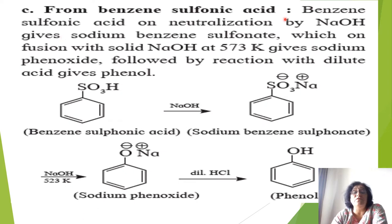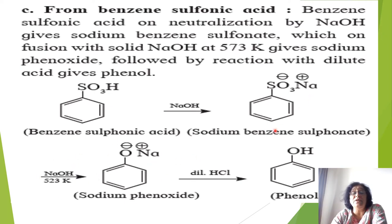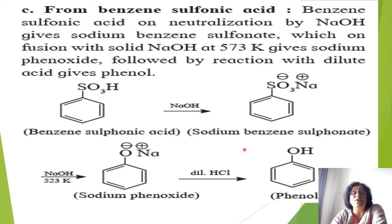Preparation of phenol from benzene sulfonic acid: benzene with a sulfonic acid group reacted with NaOH forms sodium benzene sulfonate. When sodium benzene sulfonate is fused with NaOH at 523 Kelvin, sodium phenoxide is formed and Na₂SO₃ is given out. Hydrolysis of sodium phenoxide with dilute HCl gives phenol. This is a two-step reaction.